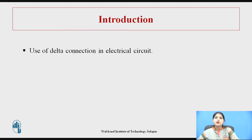First, we will see the use of delta connection in electrical circuits. Delta connection is generally used in distribution networks since the insulation required is also less. It is used for shorter distances and in applications which require high starting torque.